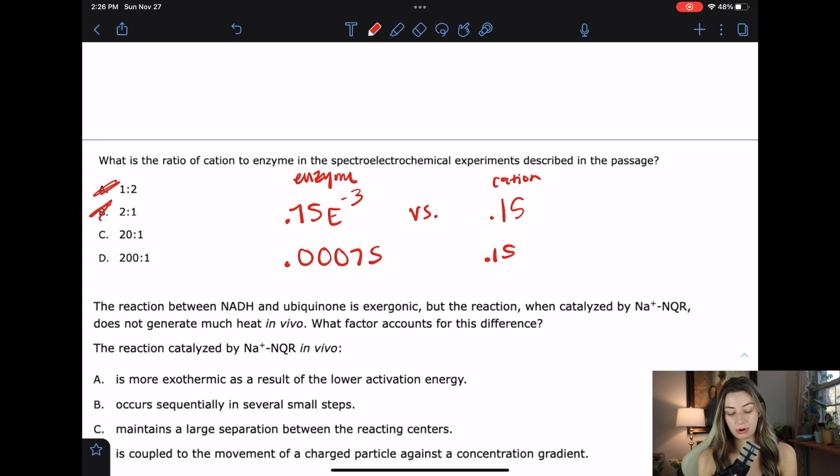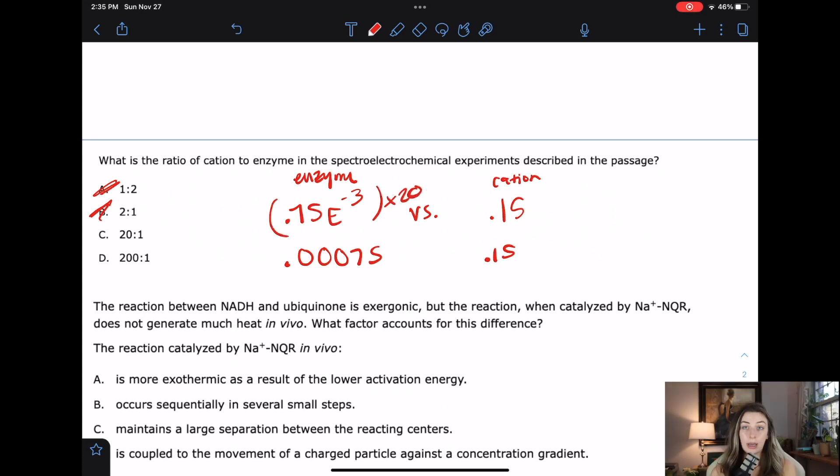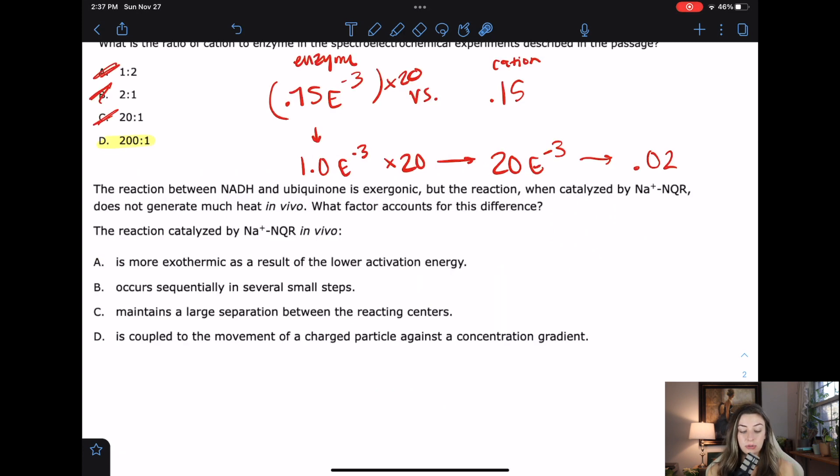So 0.75 times 10 to the negative three versus 0.15 molar. So this is enzyme and this is cation. So there's obviously a lot more cation, right? So we can go ahead and mark off A. Is there more than double? Heck yeah. This is actually 0.00075 versus 0.15. So it's definitely more than two to one. Is it more than 20 to one? So honestly, this is how I would figure this out. Even if we rounded this up to just 1.0 times 10 to the negative three times 20, what you would get would be 20 times 10 to the negative three, which is 0.02. And 0.02 is not even close to 0.15. So it's not going to be C. You're going to be closer hitting the head with 200 to one.